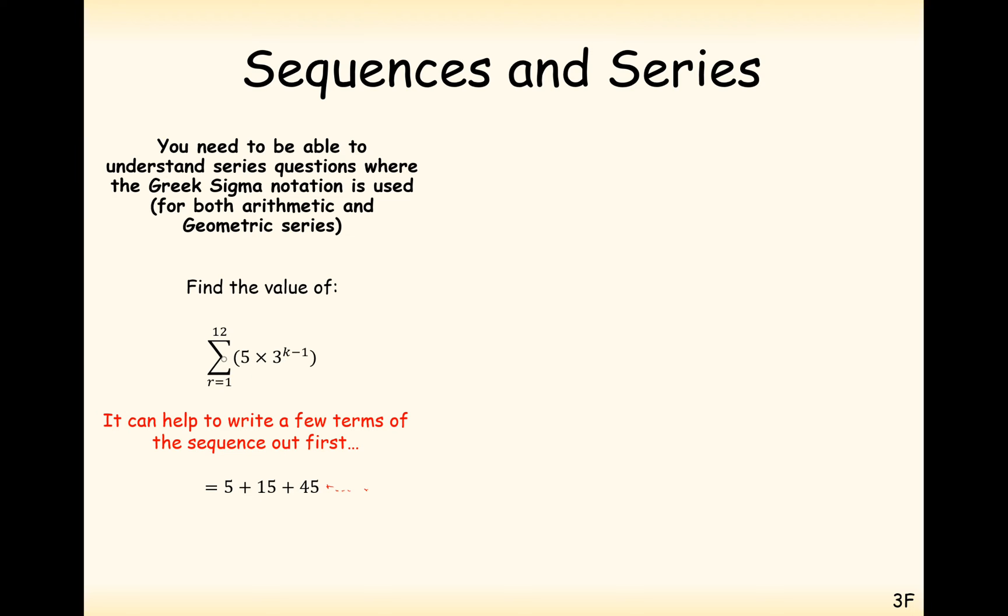Then we substitute in 2, then we substitute in 3, and we keep on going up to 12. And if we were to substitute in 12, we would get 885,735. So we want to work out this summation. A is 5. It looks like here we've got a common ratio of 3 each time. And in this case here, we've got 12 numbers that we are adding up together.